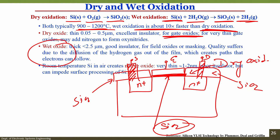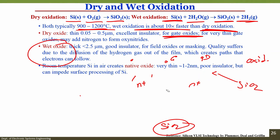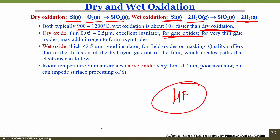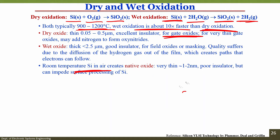At room temperature, silicon in air also creates a native oxide. The thickness of the native oxide is about 1 to 2 nanometers — it is a poor insulator. Whenever you start the fabrication process, you must remove this oxide by dipping the wafer in HF (hydrofluoric acid) for a few seconds, since even a new silicon wafer stored in air will have native oxide.